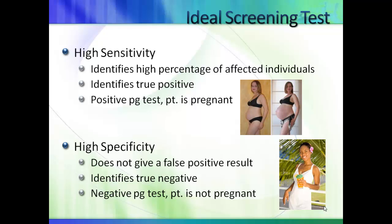The ideal test should also have high specificity, where the result does not give false positive results that may cause anxiety in a patient. A test with high specificity has a low rate of false positives. An example of a false positive is a woman with a positive pregnancy test who is not really pregnant. Another example is a patient with a positive ELISA test for HIV when in fact the patient did not have HIV — that was a false positive result.